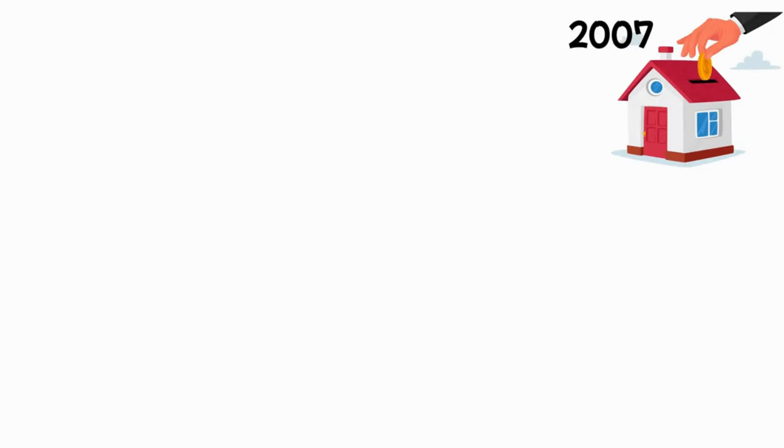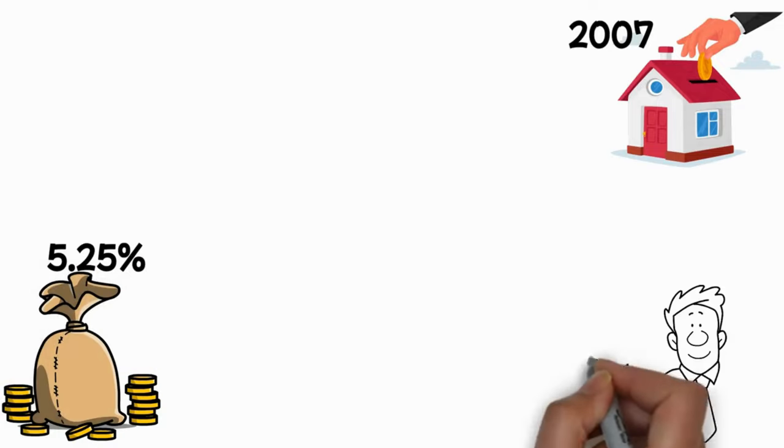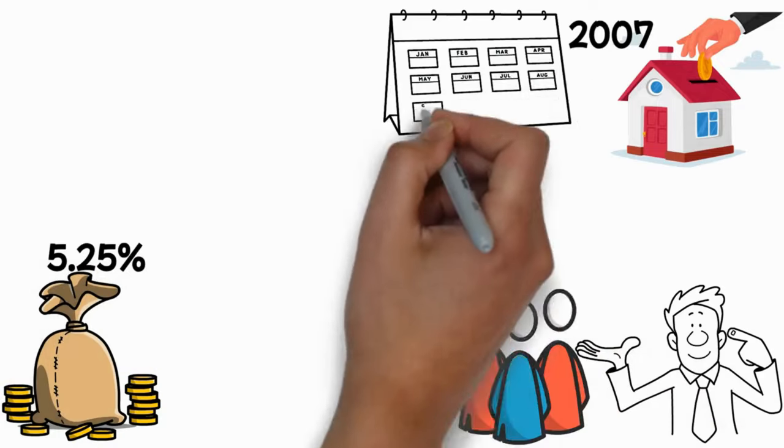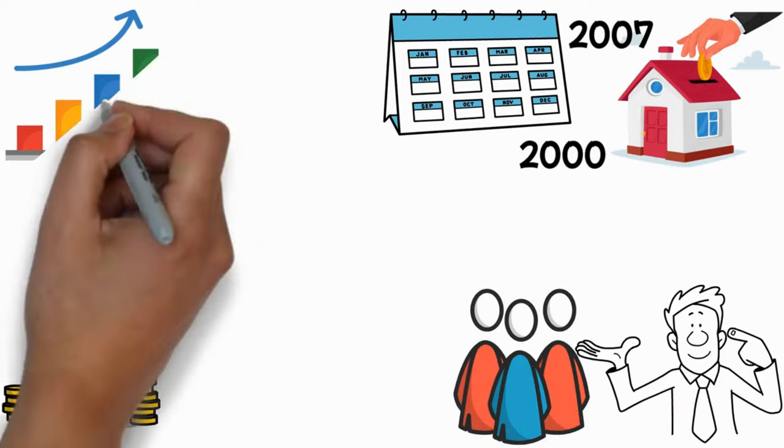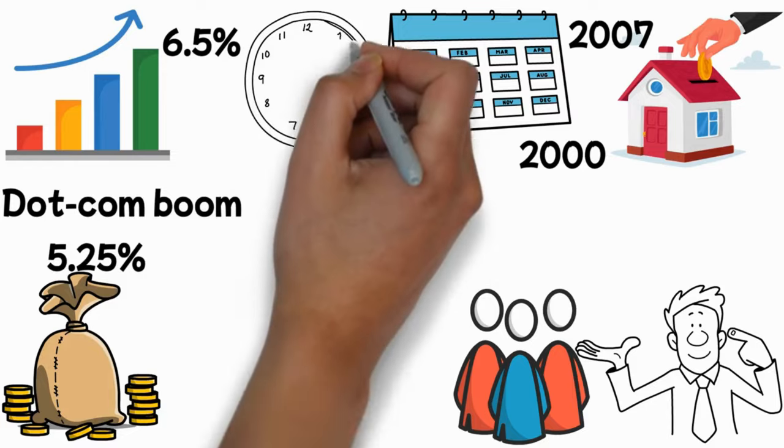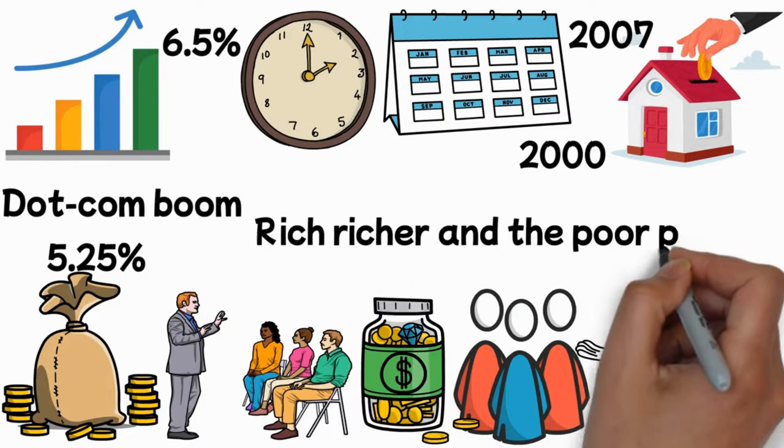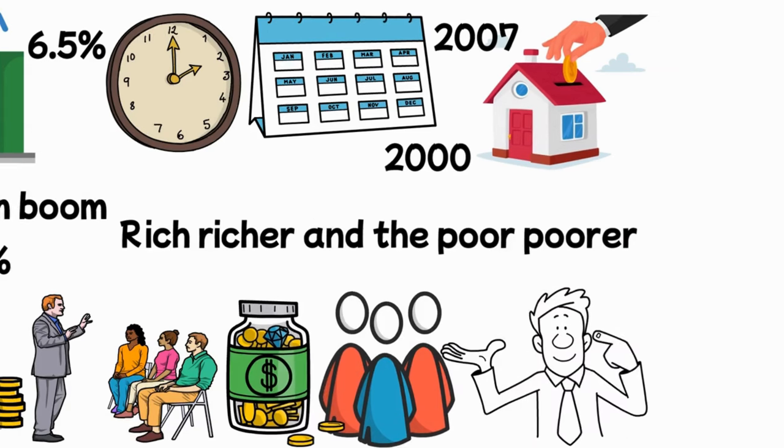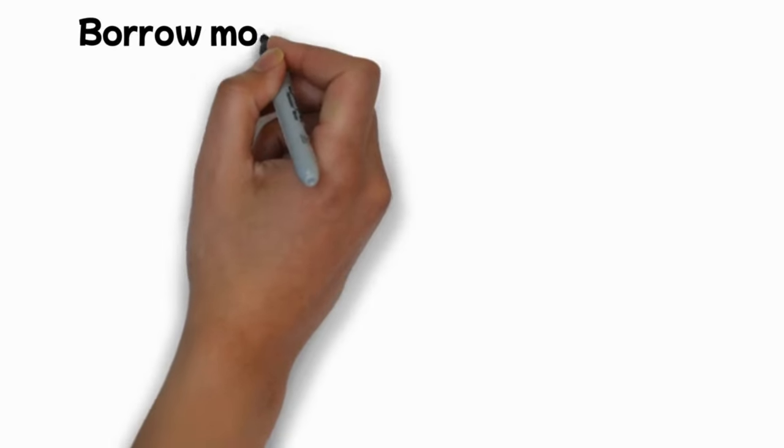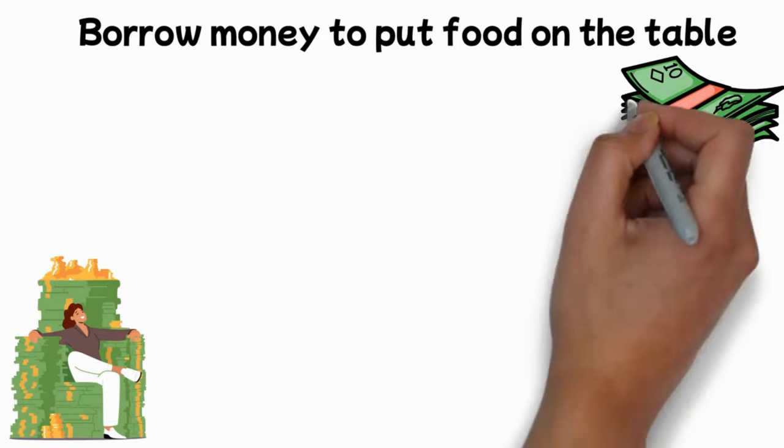When the housing bubble burst in 2007, the Fed hiked interest rates to 5.25%. Just think of the prices for customers like me and you. In the year 2000, rates were increased by the Fed to 6.5% during the dot-com boom. Because the impoverished sometimes find it difficult to save money, recessions tend to make the rich richer and the poor poorer. Because of this, during recessions, they may need to borrow money to put food on the table, whilst the wealthy do not and can use their extra money to take advantage of the situation.